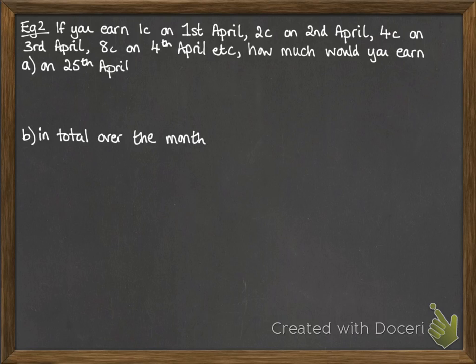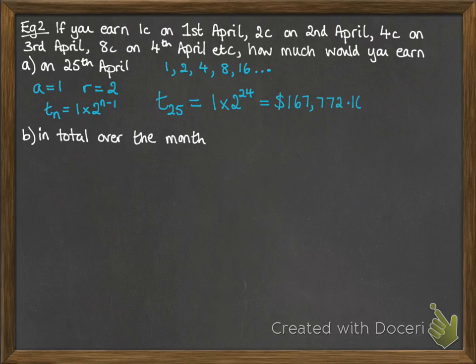Next example. You're going to earn 1 cent on the 1st of April, 2 cents on the 2nd of April, 4 cents on the 3rd, 8 cents on the 4th, and so on. So it doubles every day, but you start off with only 1 cent. Doesn't sound like a particularly good deal, but we'll see what happens. Our sequence looks like this. So our first term is 1, the ratio is 2 because it's being doubled each time. So our nth term, which I've abbreviated as Tn, will be 1 times 2 to the n minus 1. So we want to find the 25th term, so we put in our numbers for that. And you get $167,772.16, quite a lot for the 25th of April. So that soon added up as you started doubling along.